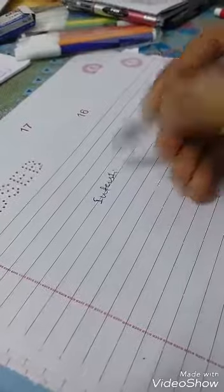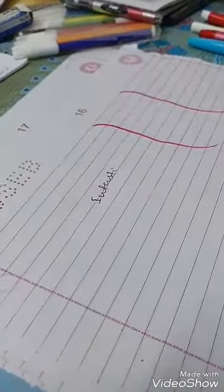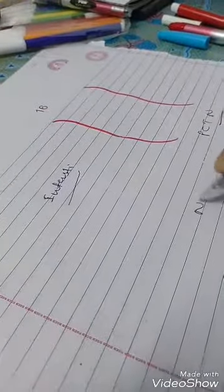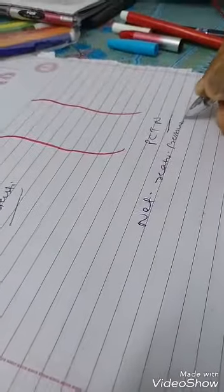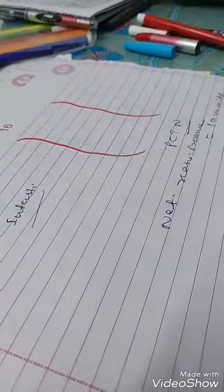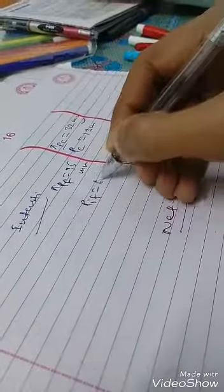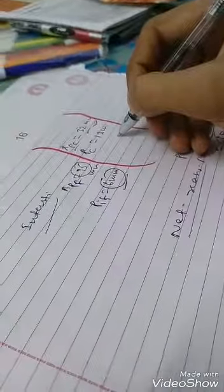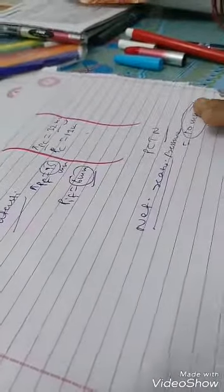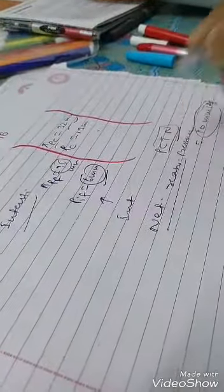Looking at the interstitium and PCTN, the net reabsorption pressure acting here is nearly 10 mmHg. The hydrostatic pressure is 13 mmHg, and the colloidal osmotic pressure in the PCTN is 32 mmHg. In the interstitium, the colloidal osmotic pressure is about 15 mmHg and the osmotic pressure is 6 mmHg. Calculating these Starling forces gives a net reabsorption pressure of about 10 mmHg.